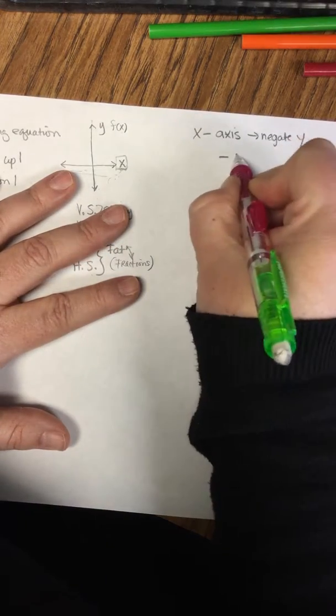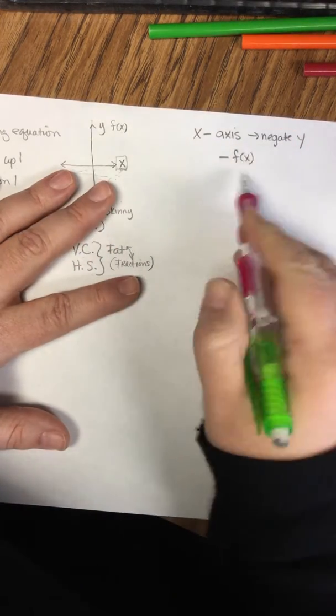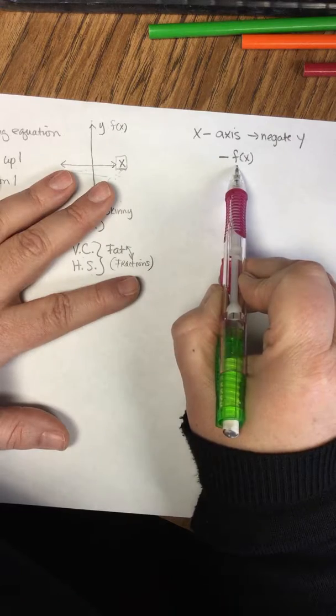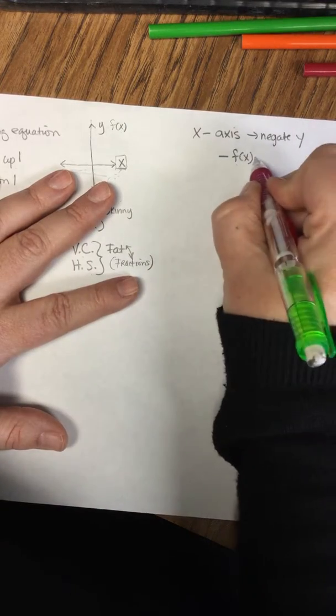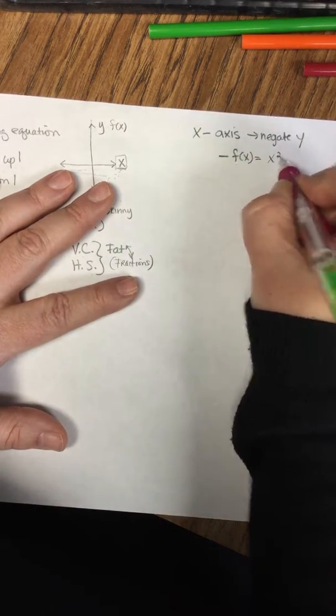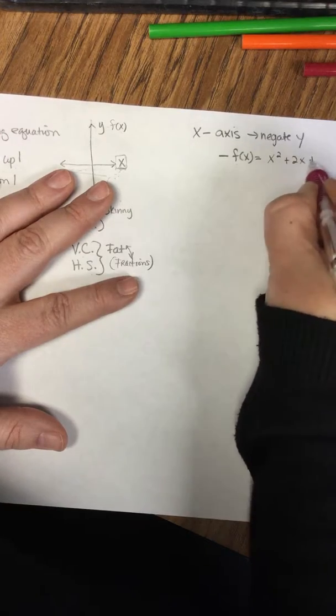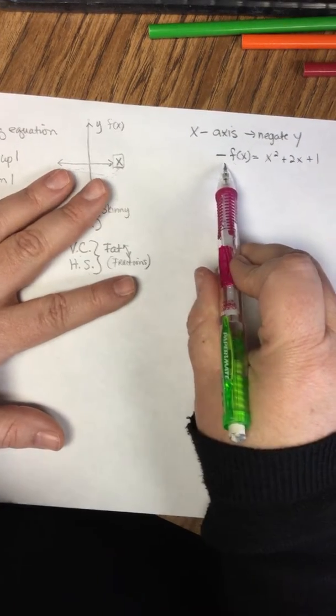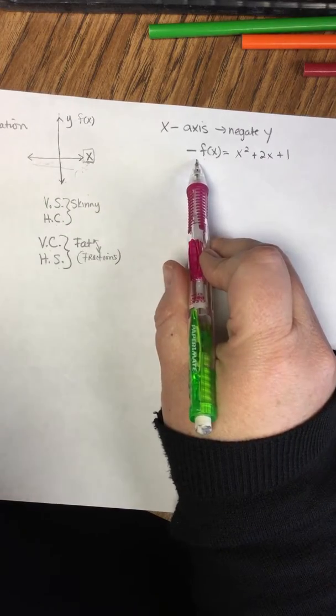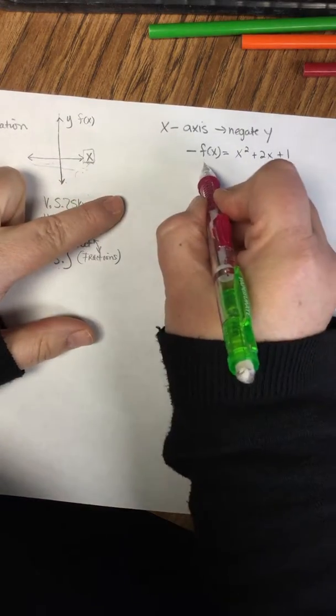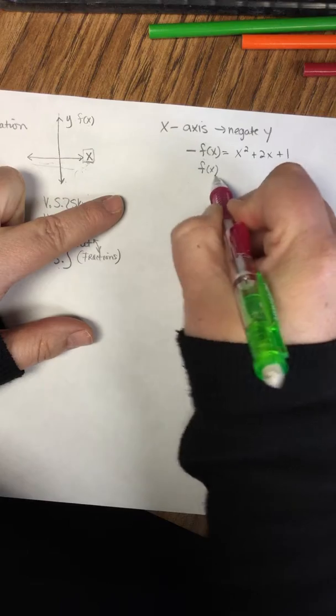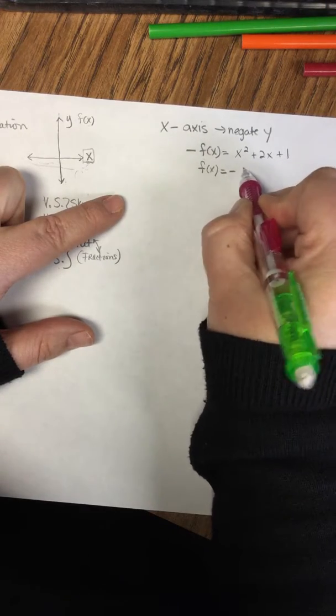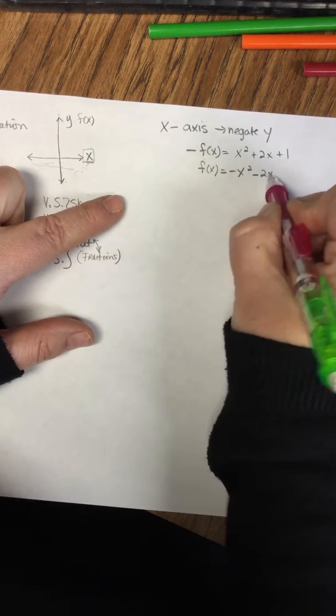That would become negative f(x) because this is just a fancy y. Let's say that our equation was x² + 2x + 1. To get this, because all of our functions need to be positive, we would have to multiply by a negative or divide by a negative, which is going to just negate everything on this side.